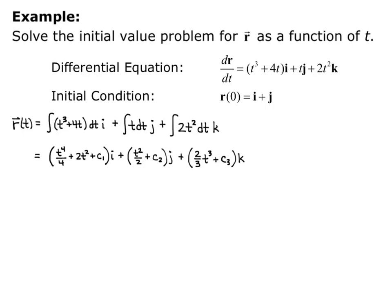Now I want to use my initial condition to solve for c1, c2, and c3. My initial condition was r of 0 equals 1i plus 1j plus 0k. I'm writing the 1 in front of i and j and the 0 in front of k just to keep track of what I'll set each component equal to.